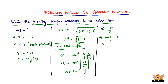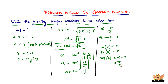To find the argument, we also have to check where the imaginary and real parts of the complex number lie — whether they are greater than or less than zero. In this case, both the imaginary part and the real part are less than zero. So the argument is given by alpha minus pi, which is pi by 4 minus pi, giving us minus 3 pi by 4.